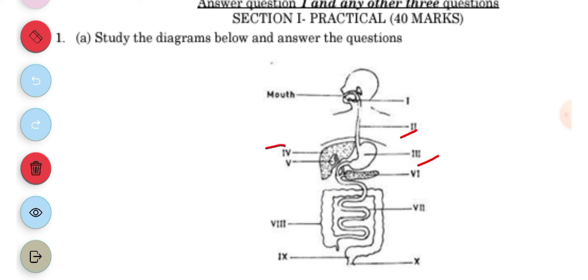IV is the liver, V is the gallbladder, VI is the pancreas, VII is the large intestine, VIII is the small intestine, IX is the rectum, and X is the anus.